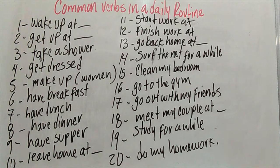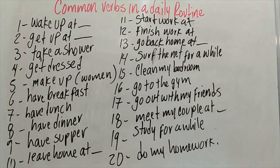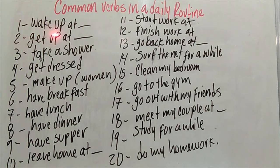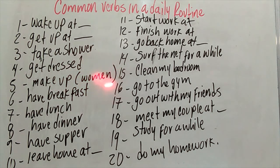Now we're going to have the common verbs in a daily routine — in order for you to write your daily routine. I have 20 common verbs. First: wake up at. Second: get up at — at this point we write a time, for example 'I wake up at five o'clock'. Third: take a shower. Fourth: get dressed. Fifth: make up — just for women, though if you're a man and want to, that's up to you.